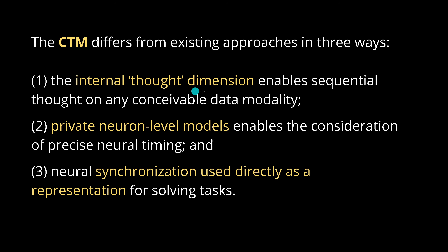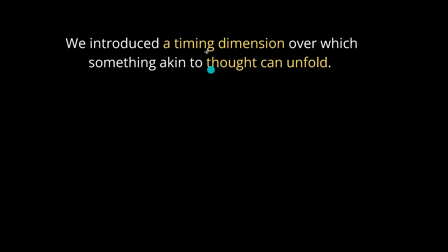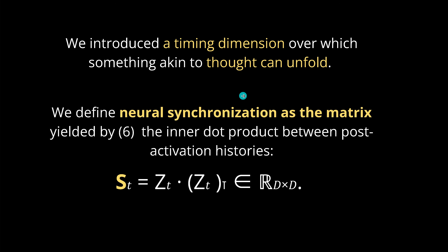Second, we have private neuron-level models, enabling the consideration of precise neural timing. Third, synchronization is used directly as the representation for solving tasks. The authors introduce a timing dimension over which something akin to a thought can unfold, and they define a synchronization matrix — a tensor structure that is a kind of inner dot product between post-activation histories.